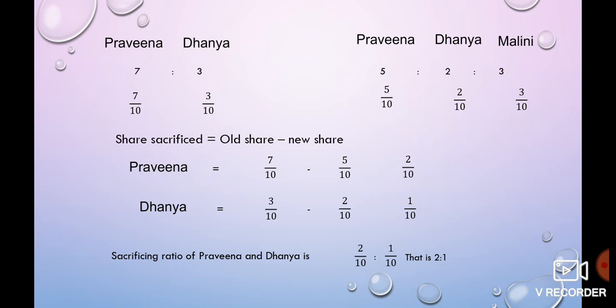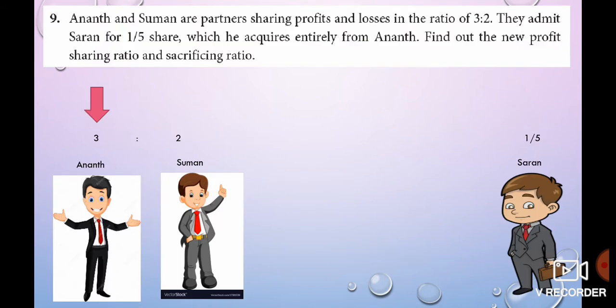So, new profit ratio is equal to the old share ratio. Old share minus new share is the sacrificing ratio. That is the sum.